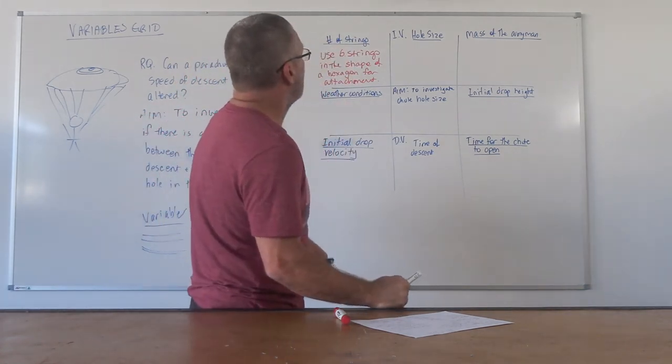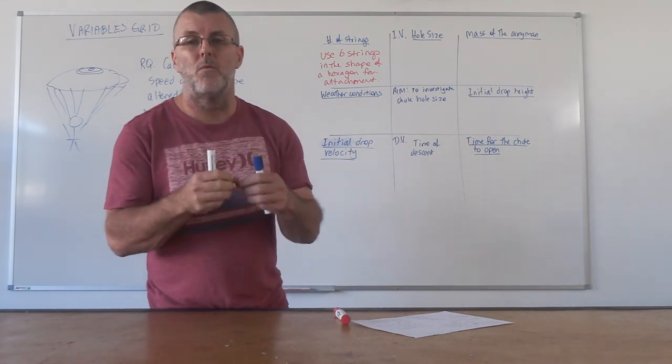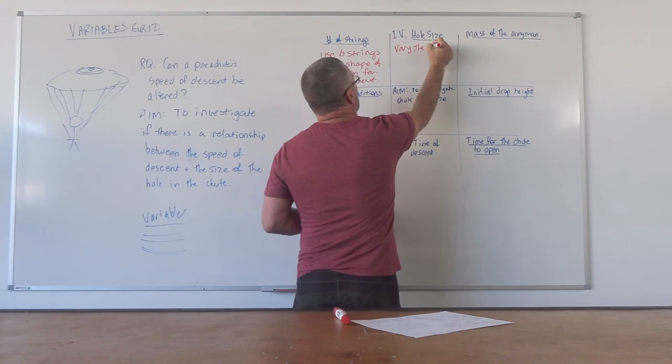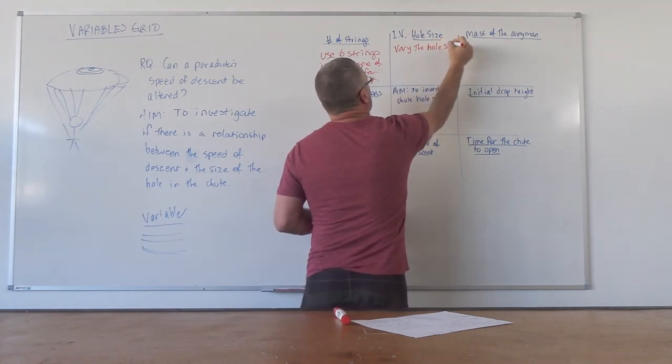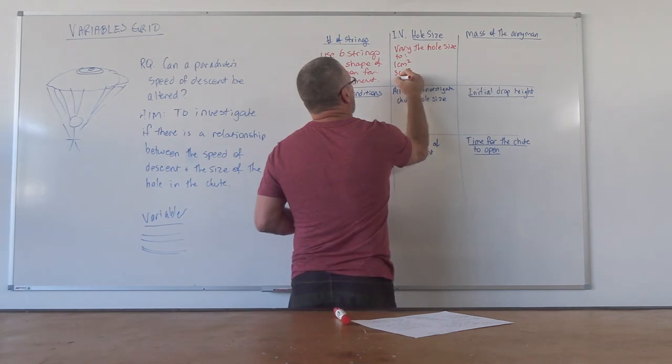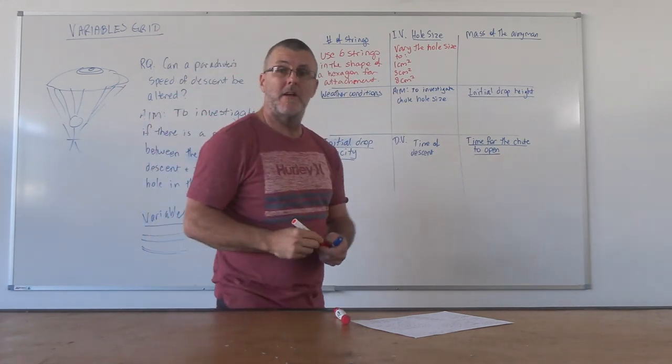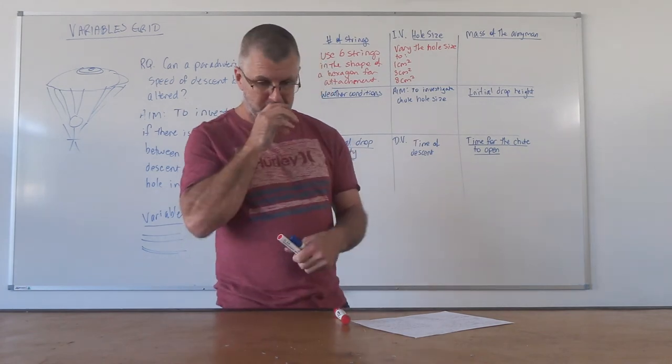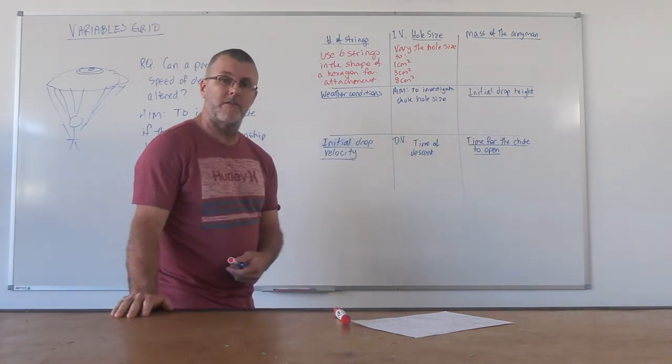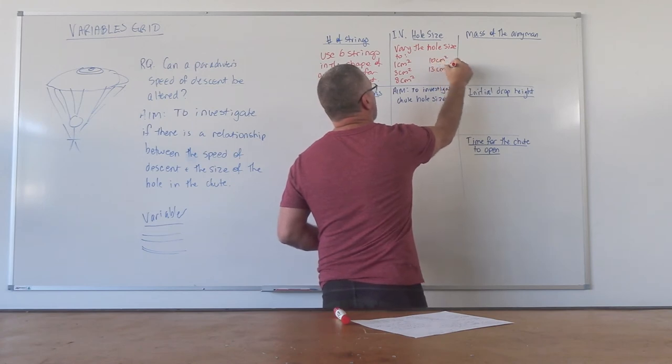When I look at something like the hole size for the independent variable. So when I'm looking at the hole size, I'm going to actually stipulate right at the very outset what size holes I'm going to use. So I might put it here, hole size, the hole size to one centimeter squared, three centimeters squared, eight centimeters squared. And we should be doing in junior, in primary school, then maybe three iterations of your independent variable is enough. With the new senior QCAA syllabus in science, we need to look at five iterations of the independent variable. So in this case, let's go another couple. Let's put 10 centimeters squared and lucky 13 centimeters squared.